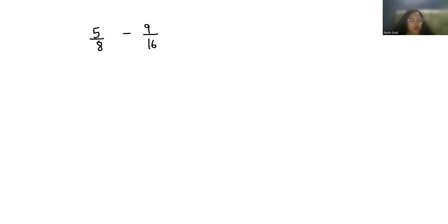First way, you can make the denominator same by multiplying by 2 in 8. If you make any change in denominator, you have to make the similar change in numerator as well. So multiplying by 2 in numerator as well, it is 10 by 16 minus 9 by 16, which equals 1 by 16.